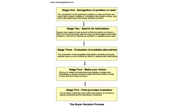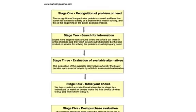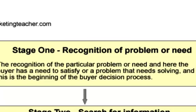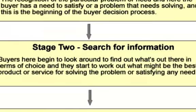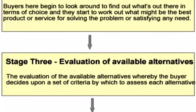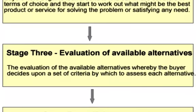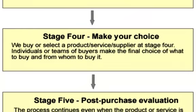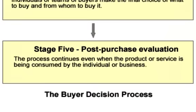The stages of the buyer decision process are: the recognition of need, the search for information, and evaluation of all available alternatives, the selection of the final product and its supplier — and of course services are included — and then ultimately the post-purchase evaluation.